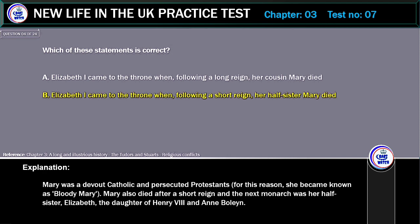Correct answer: Elizabeth I came to the throne when, following a short reign, her half-sister Mary died. Explanation: Mary was a devout Catholic and persecuted Protestants. For this reason, she became known as Bloody Mary. Mary also died after a short reign and the next monarch was her half-sister Elizabeth, the daughter of Henry VIII and Anne Boleyn.